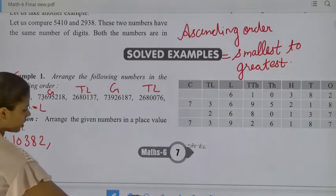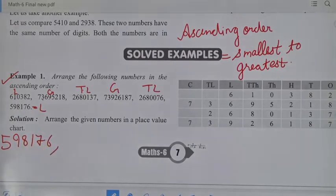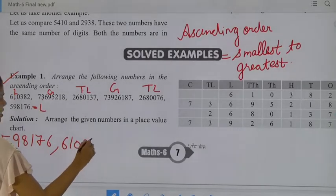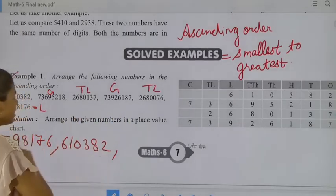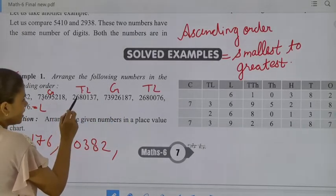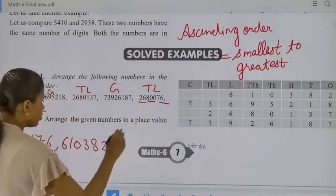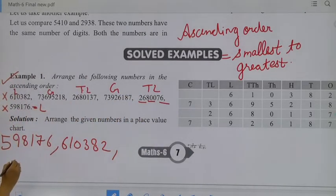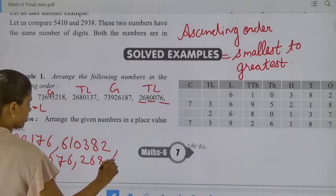So, looking at the smallest number among these — that is 5,98,176. And the next one after that, which is 6,10,382. Then moving on, we have 26,80,137 and 26,80,076. So the next smallest number is 26,80,076, and after that comes 26,80,137.